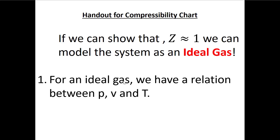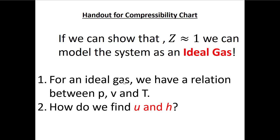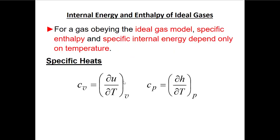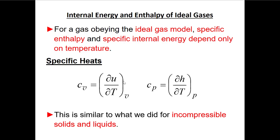For an ideal gas we have this relationship between P, v, and T, and sometimes going from state to state we can use P·V over T equals a constant. How do we find specific internal energy and specific enthalpy? If we've invoked the ideal gas law and our temperature differences are relatively small, we can also invoke the same idea we use for solids and incompressible fluids: we can approximate specific heat as constant. These definitions are the same as for solids and liquids, except here cv and cp are actually different values.